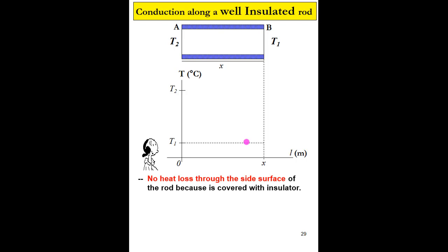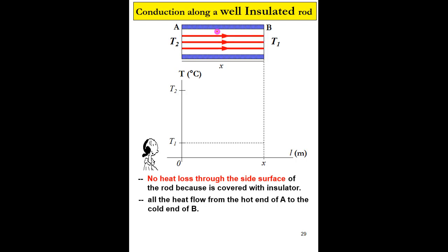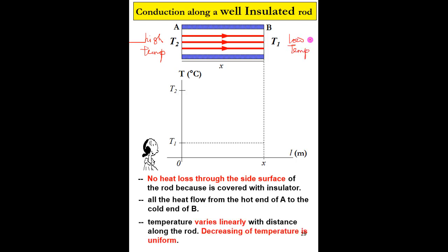For a well-insulated rod, there will be no heat loss through the side surface of the rod, because the rod is covered with insulator along its length. So the heat will not be able to escape from the rod. All the heat will flow from the hot end A to the cold end B, from high temperature to low temperature. The temperature will vary linearly with distance along the rod, and the decrease of temperature is uniform.